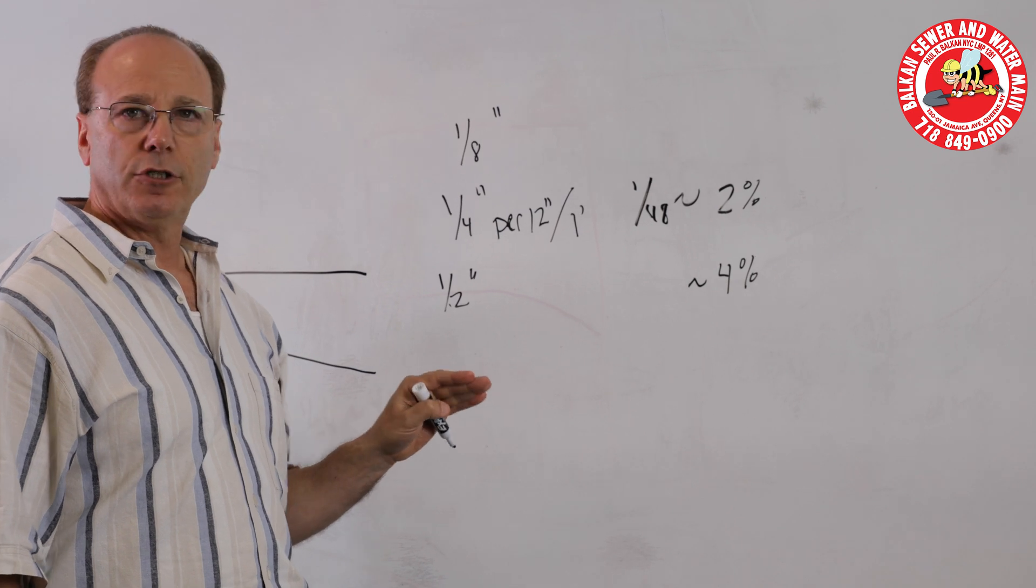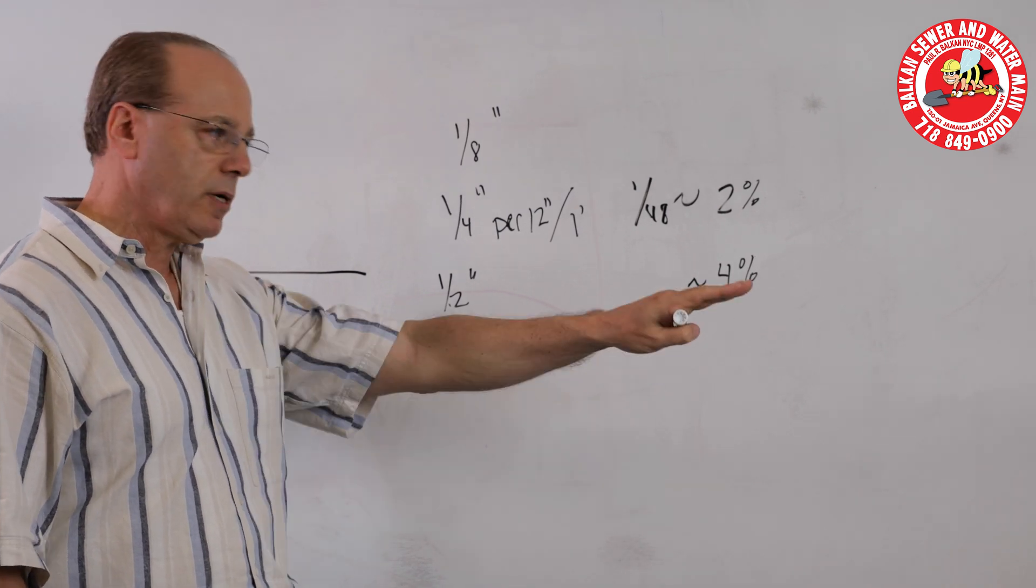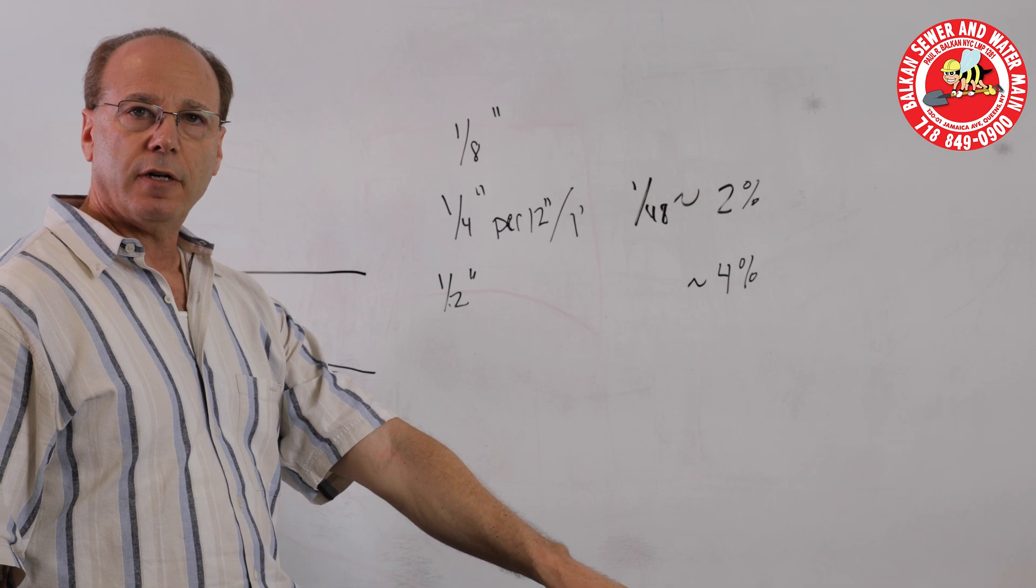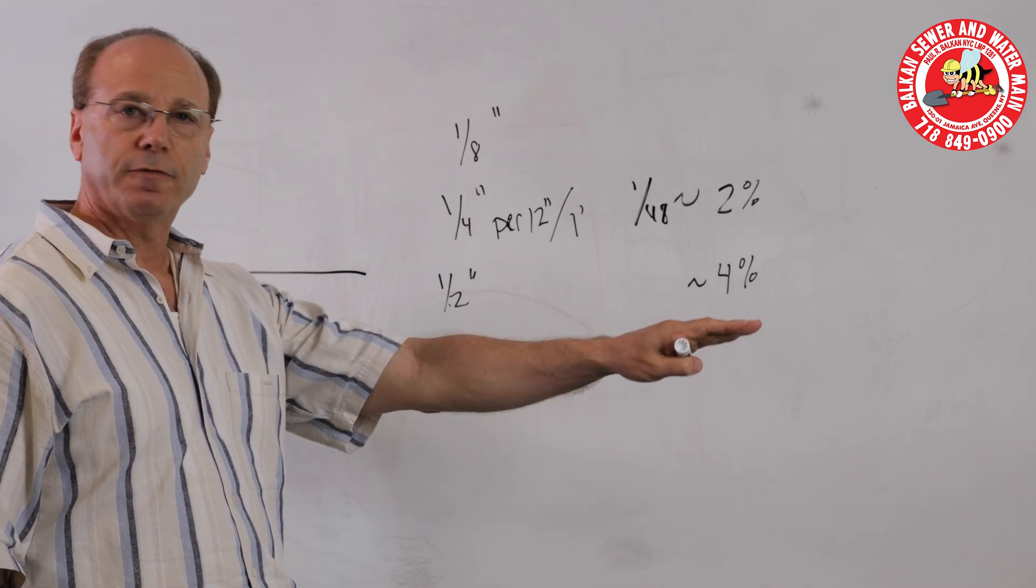That means if, for instance, you had a 100 foot run of pipe, you would have 4 feet of pitch. 4 feet, 100 foot run, that's 4%.